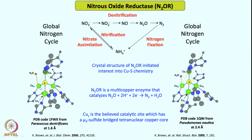Each of the copper centers are associated with ligands. As you can see, this fourth copper center is associated with only one histidine, while all other copper centers have two histidines on them. This site is the center where nitrous oxide is converted to nitrogen. It is a multi-copper enzyme with 4 copper centers that catalyzes nitrous oxide plus 2 protons plus 2 electrons going to nitrogen and water. This copper-sulfide core remains unknown in the literature from the synthetic community.